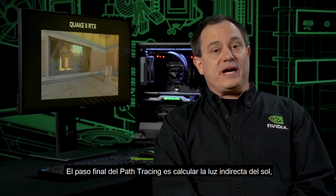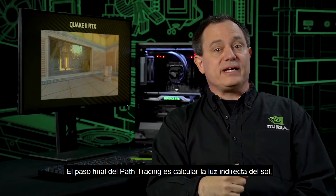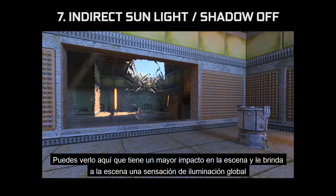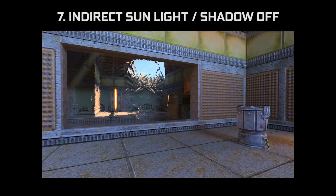The final step for the path tracer here is to compute the indirect sunlight. We take the bounce from that surface, trace the ray to the Sun, and compute light and shadow just as we've done before. You can see here it has a much larger impact on the scene, and it gives that scene a much more global illumination feel to it.